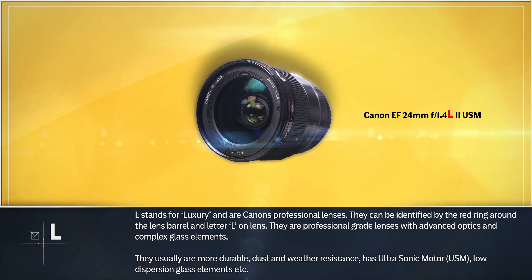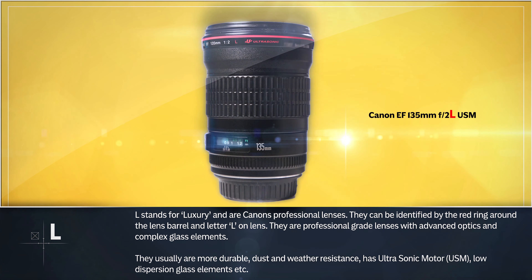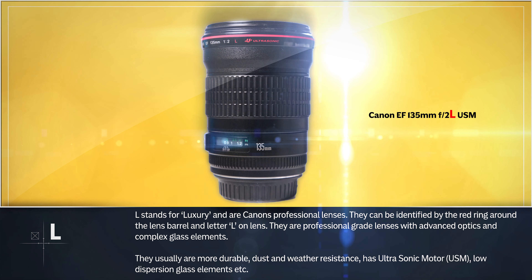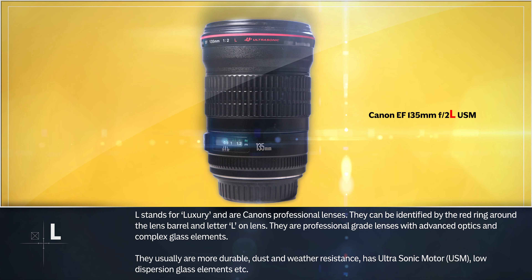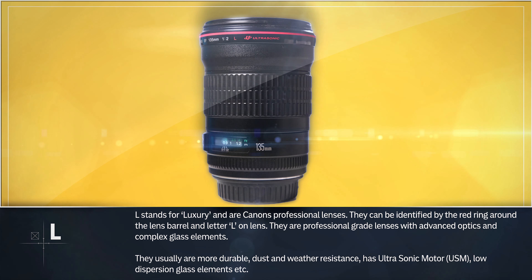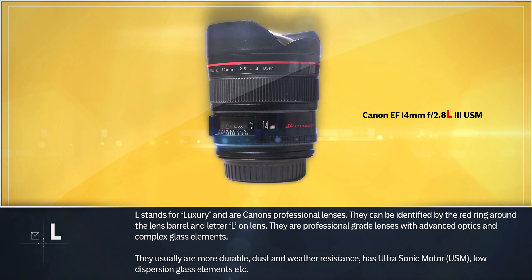L stands for Luxury and these are Canon's professional lenses. They can be identified by the red ring around the lens barrel and the letter L on the lens. They are professional grade lenses with advanced optics and complex glass elements. They are usually more durable, dust and weather resistant, have an ultrasonic motor, low-dispersion glass elements, and more.